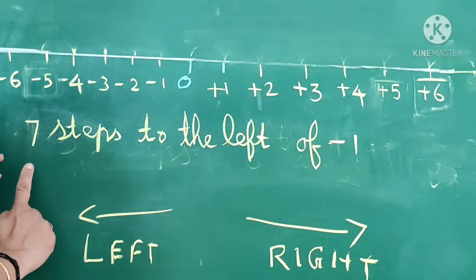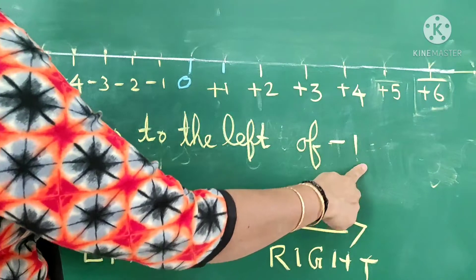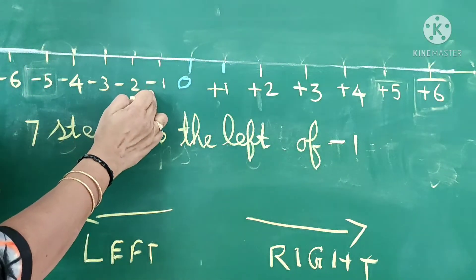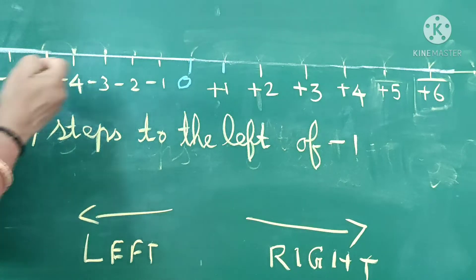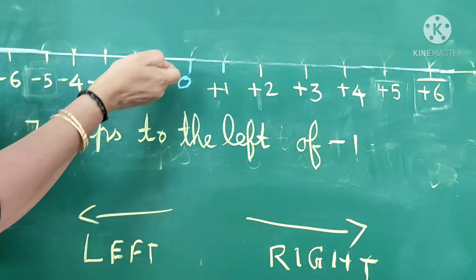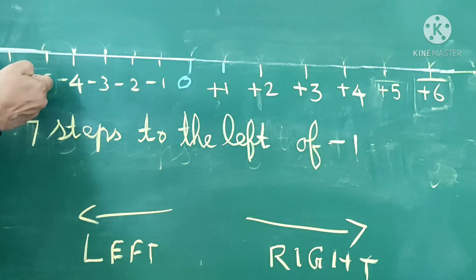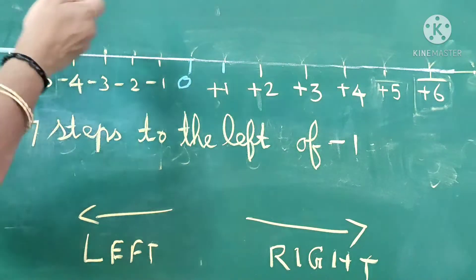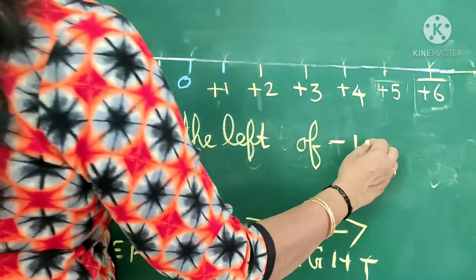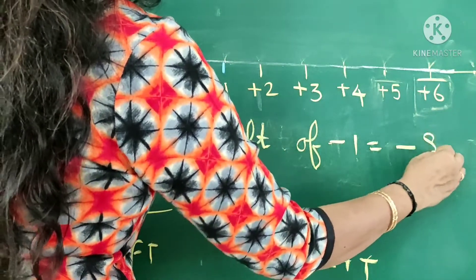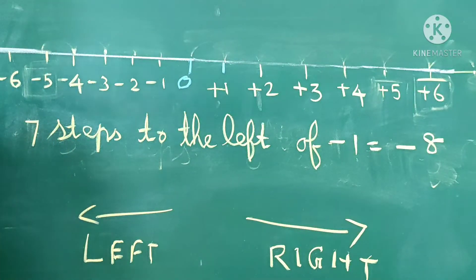Next example: 7 steps to the left of minus 1. Minus 1 is here, and we are going to move to the left side. Counting 1, 2, 3, 4, 5, 6, and 7 — it will reach minus 8. The answer is minus 8.